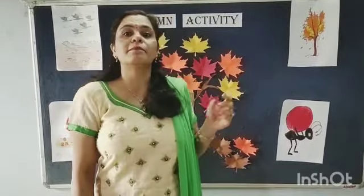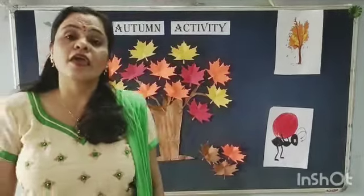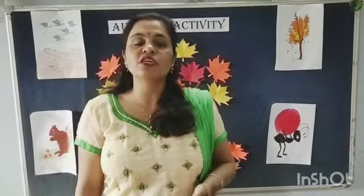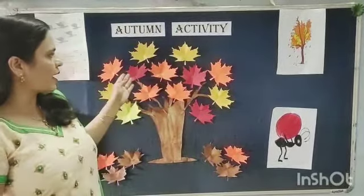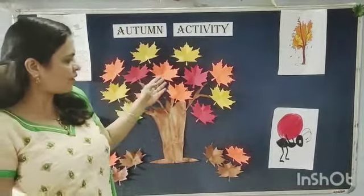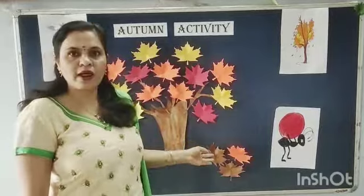Autumn season comes in between summer and winter, and it starts in September and ends in December. In autumn, most of the leaves change their colour — they change from red, orange, and brown.